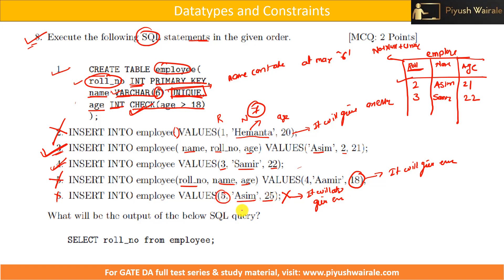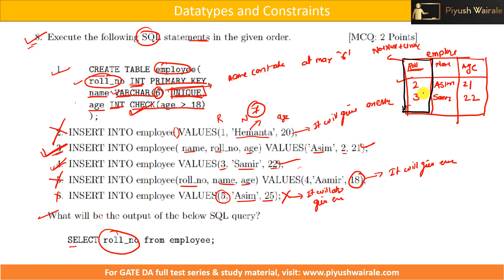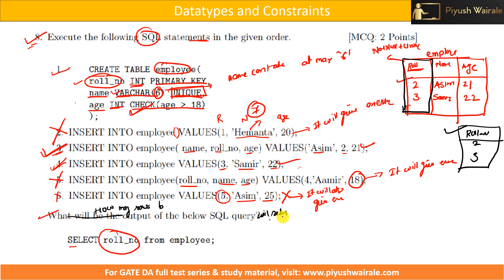So my employee table after executing all statements contains only these two records. The SQL query selects the role_number from the employee table. The output will be role numbers 2 and 3. In an exam, they may ask what the output is or how many rows are returned — in this case, the answer is 2 rows.